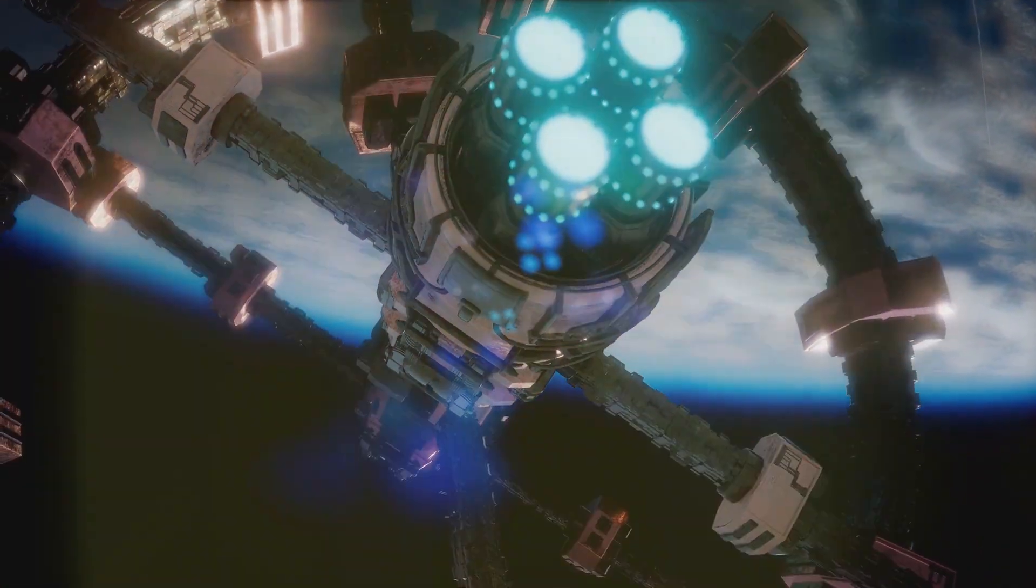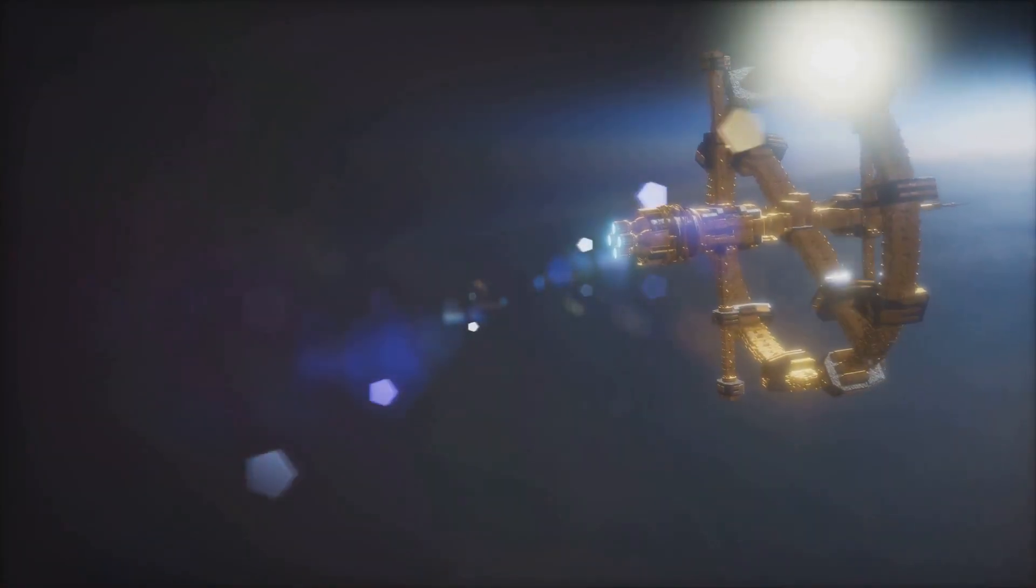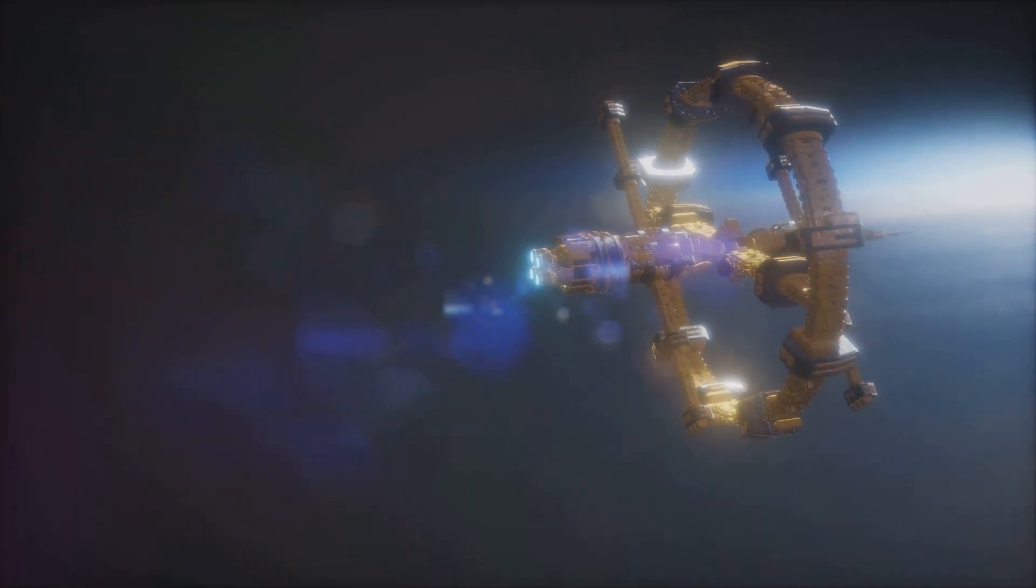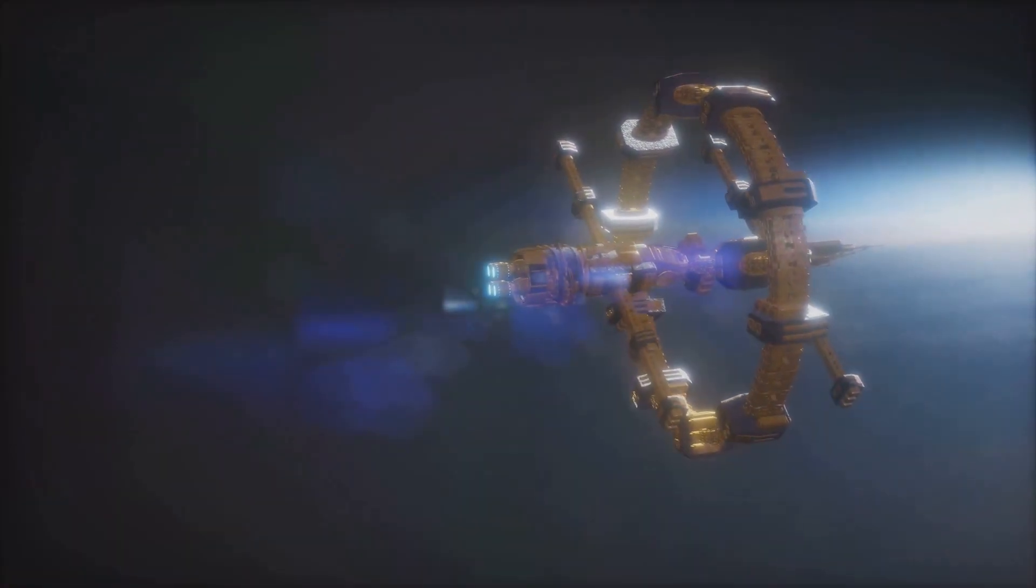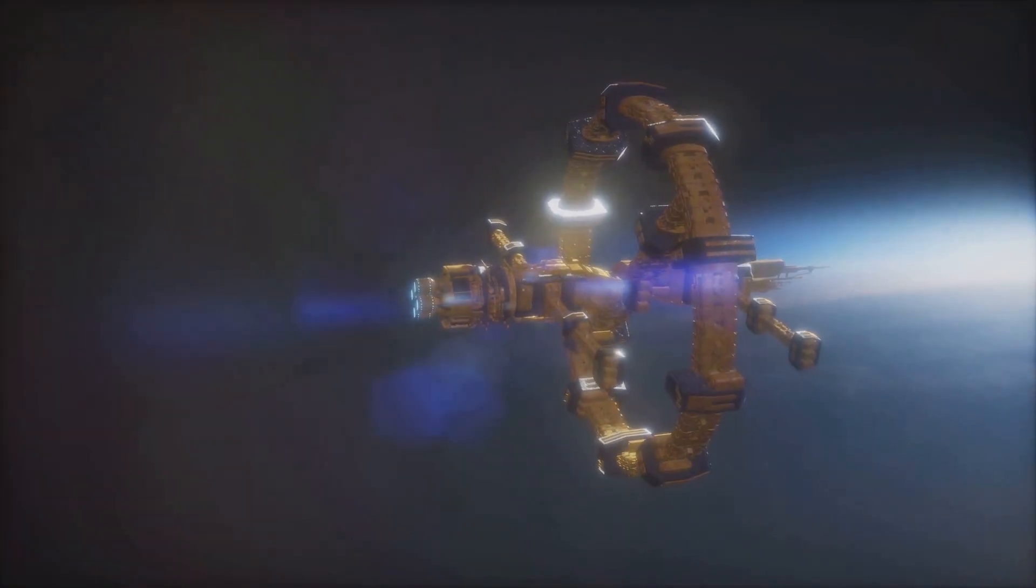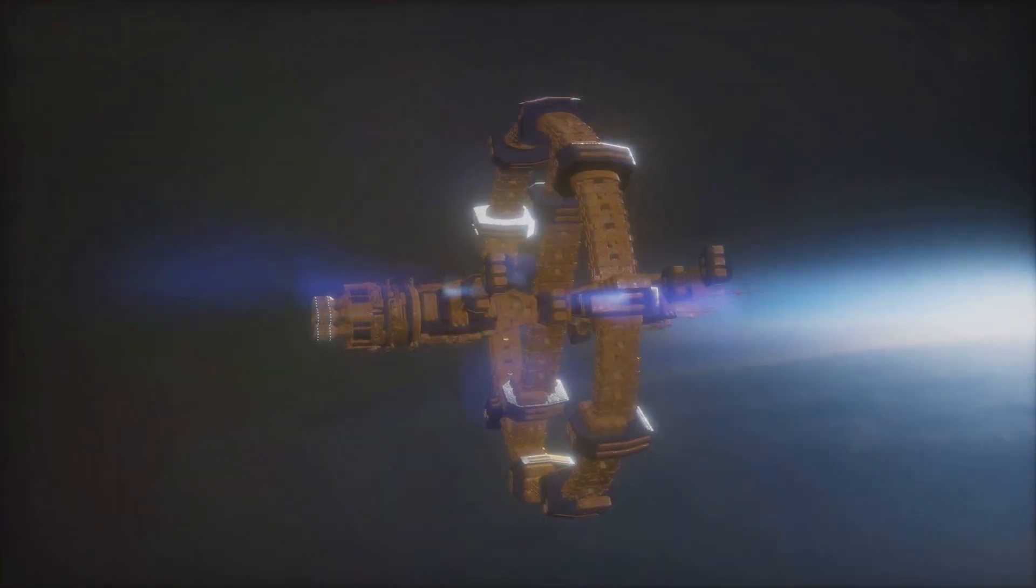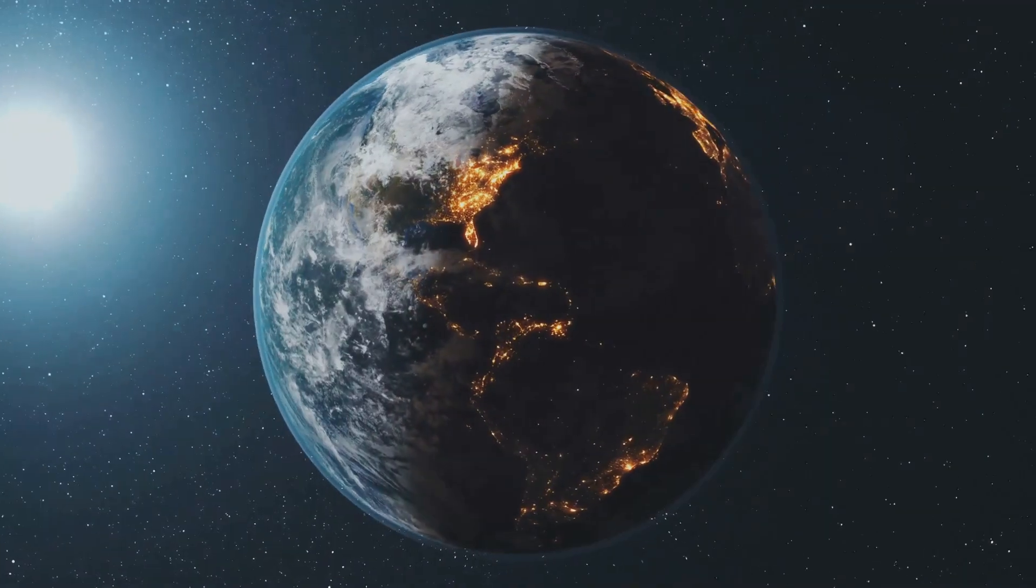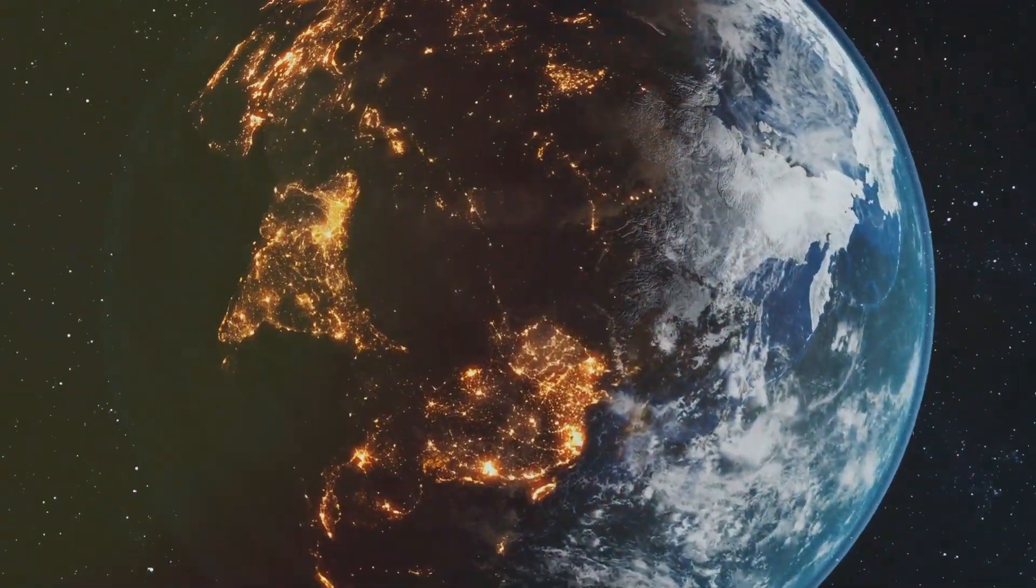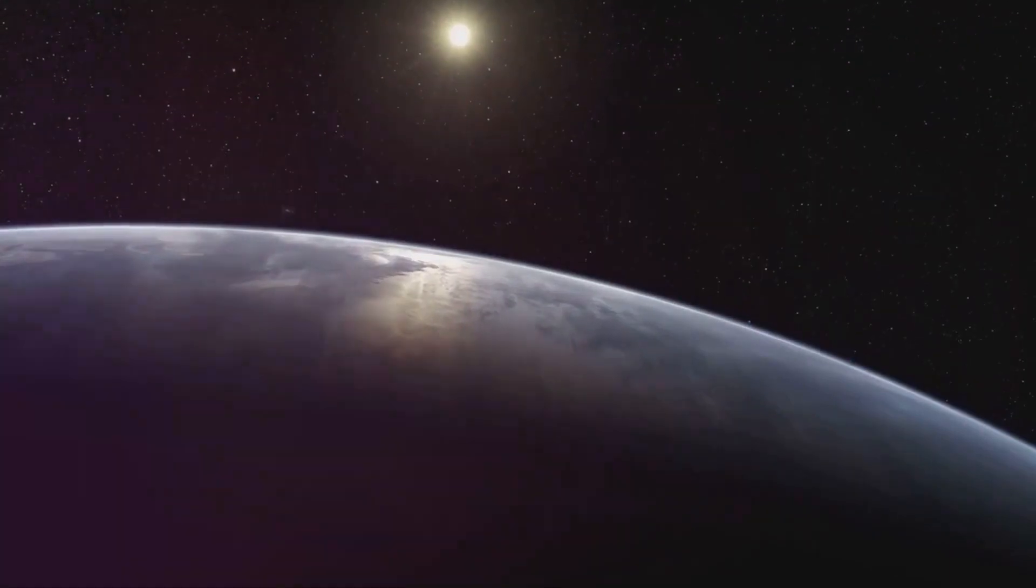These changes can in turn influence the Earth's climate and weather patterns over long periods. The Earth's magnetic field is another fascinating aspect of its movement through space. Generated by the motion of molten iron in the Earth's outer core, the magnetic field protects our planet from harmful solar radiation. This magnetic shield is crucial for sustaining life on Earth, as it deflects charged particles from the Sun, preventing them from stripping away the atmosphere. The magnetic field also influences the behavior of charged particles in space, creating phenomena such as the auroras, which are visible near the polar regions.